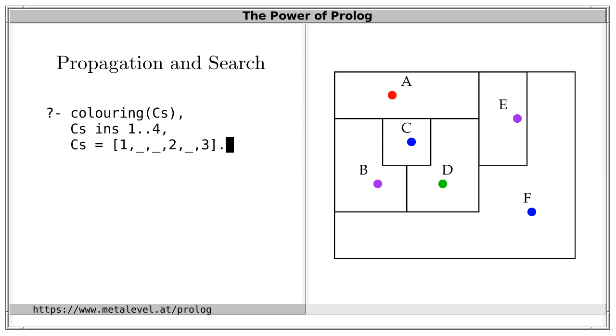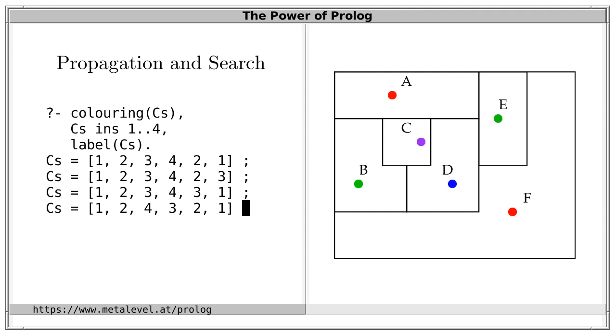And of course, in practice, we don't have to manually find a solution by trial and error. We can simply use this mentioned label predicate, so label Cs, and this searches for concrete solutions for us. We now get a concrete solution and on backtracking, the system enumerates all solutions. And of course, constraint propagation also happens internally at every step of the search and prunes the search space also during the search. And that's a major attraction of constraint-based approaches. And this yields very efficient solutions for such combinatorial tasks. And in fact, this is one of the key reasons why Prolog is often used for such tasks.